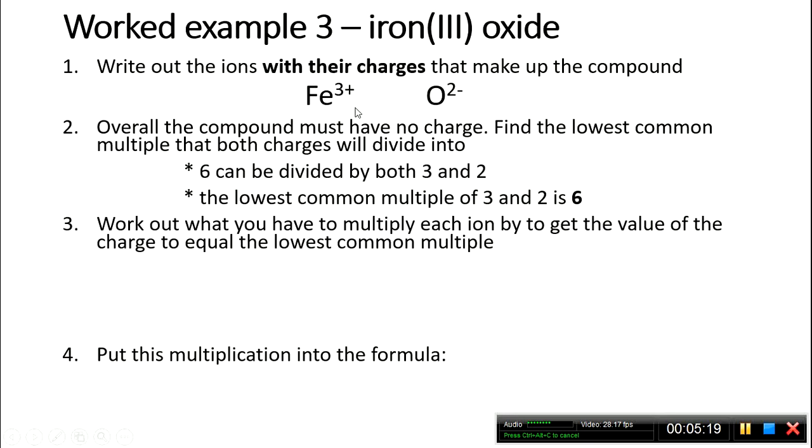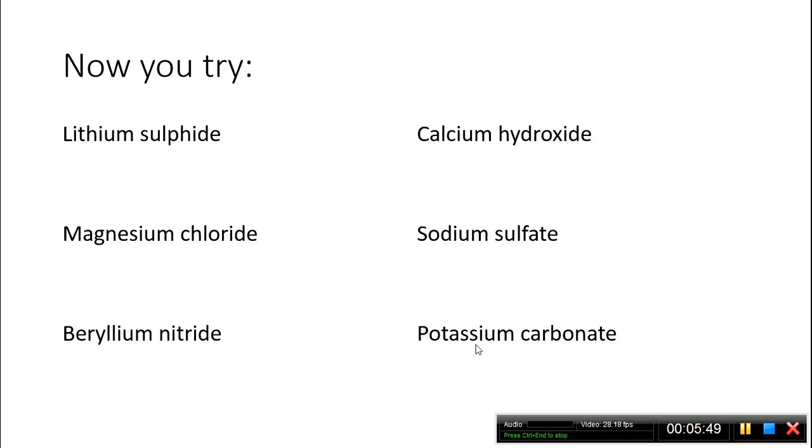What do I have to times each by to get a 6+ charge and a 6- charge? If I multiply the iron by 2, I get a 6+ charge, and if I multiply the oxide by 3, I get a 6- charge, and they balance and cancel out. Putting that into the formula gives me Fe2O3.